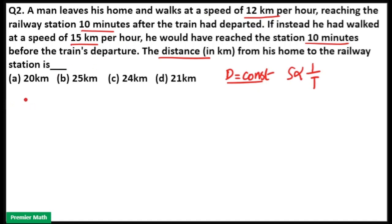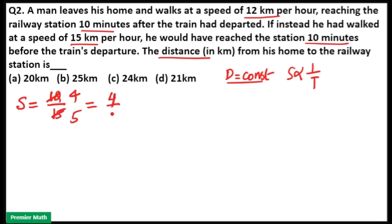The speed ratio is 12 to 15. Simplifying: 12 = 3 × 4 and 15 = 3 × 5, so the speed ratio is 4 to 5. Since time ratio is the reverse of the speed ratio, the time ratio is 5 to 4.